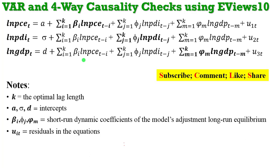You must pick your lags from either of these information criteria. I have several videos on optimal lag selection — I advise you to watch them. The alpha, sigma, and delta signs here are just the intercepts of each of the equations. The betas, phis, and gammas are all short-run dynamic coefficients of this model. Remember, the VAR model is a short-run model, so beta, phi, and gamma are all short-run coefficients. The U terms are the error terms which must not be correlated with one another.